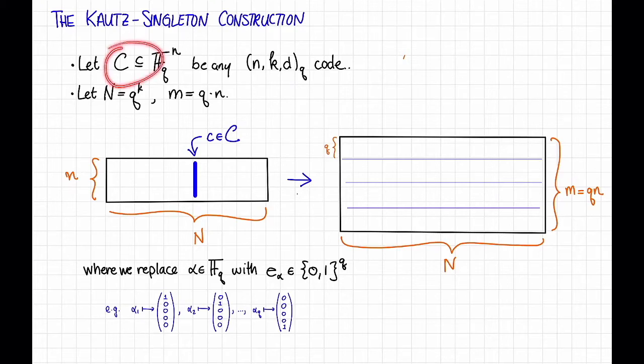Now, given this code C, here's how we're going to form a pooling matrix. First, we're going to form this matrix over FQ. So this is the matrix whose columns are all of the codewords of C. That is, the matrix is little n by capital N, and it lives in FQ to the little n times capital N. Every column is just going to be some codeword of C. And we're going to take all of the different codewords of C and stack them up next to each other as the columns. Notice that the dimensions work out. Every codeword of C has length little n, and there are q to the k such codewords, and conveniently I've defined capital N to be equal to q to the k.